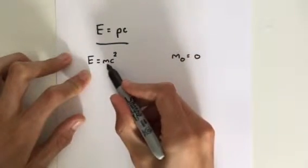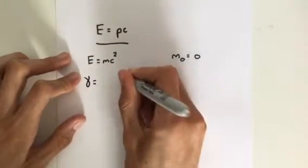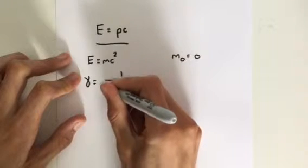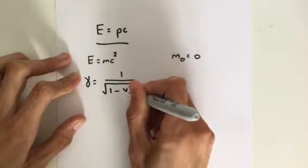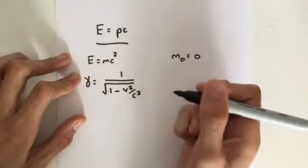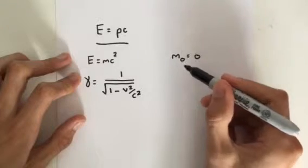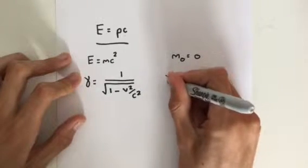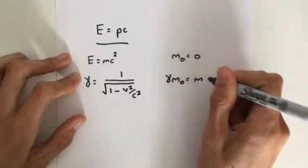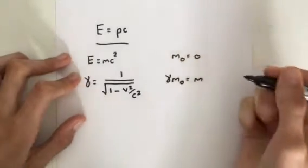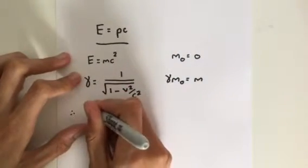So we know gamma is equal to 1 divided by the square root of 1 minus V squared divided by C squared. So if we take gamma and times it by a rest mass, we get that gamma times M0 is equal to mass. So we can write E equals MC squared as E is equal to gamma times M0 multiplied by C squared.